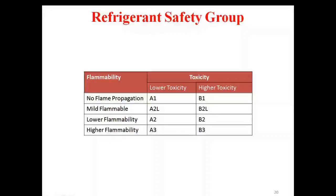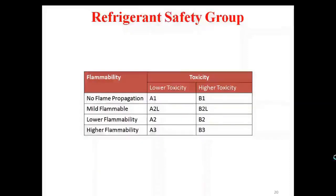Next is the refrigerant safety group. This covers flammability and toxicity. Moving from 1 to 2 to 3 in flammability represents moving from no flame propagation towards higher flammability. In toxicity, A represents lower toxicity and B represents higher toxicity. So A1 represents no flame propagation and lower toxicity. For an ideal refrigerant, we want it to be in safety group A1.